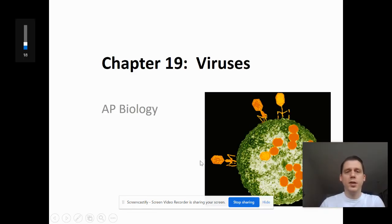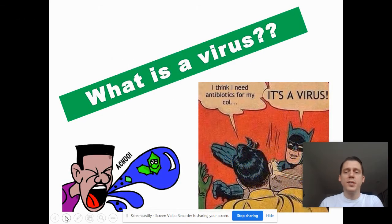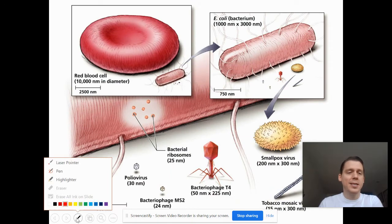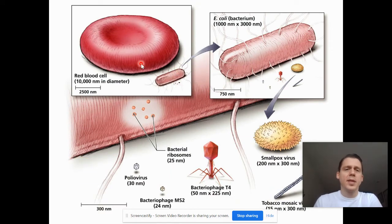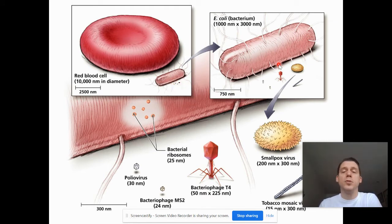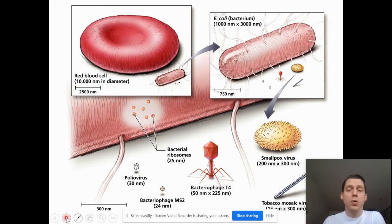Today we are going to talk about viruses — what a virus is and how a virus works. Here you can see some different diagrams showing the size of a virus. Here is a eukaryotic human red blood cell compared to a bacteria, and all of these little dots are actually viruses. If we zoom in and then zoom in again, we can see that viruses are incredibly, incredibly tiny.